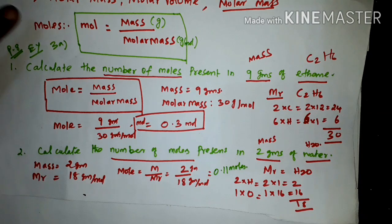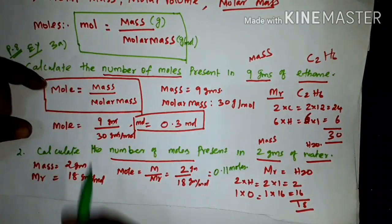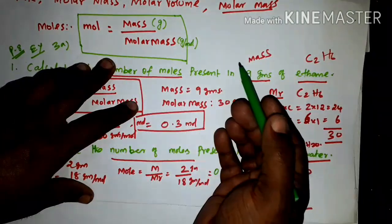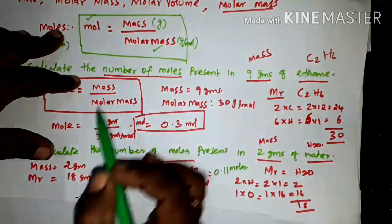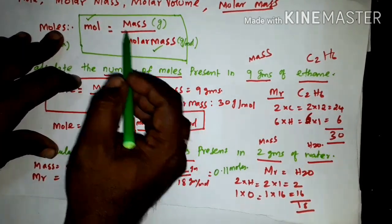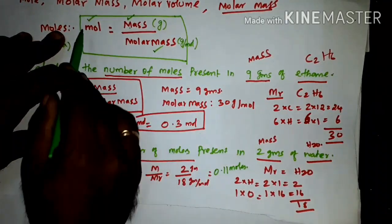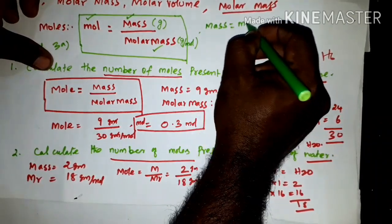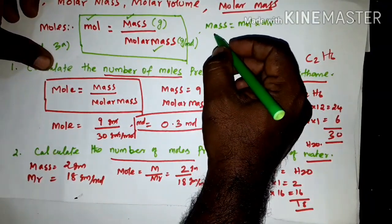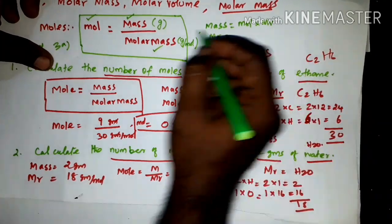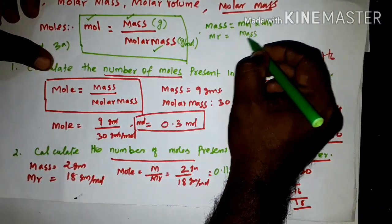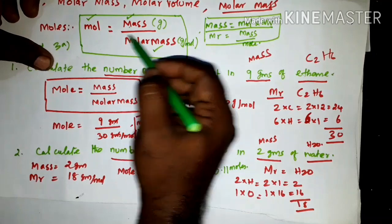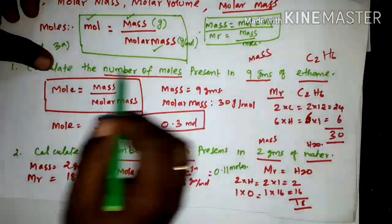The relationship is: moles equal to mass divided by molar mass. If the mole is given, you can find mass using: mass equal to moles into molar mass. Also, if mass and moles are given, you can calculate molar mass as mass divided by number of moles. So there are three formulas derived from the one basic formula.